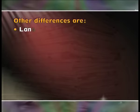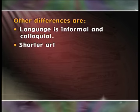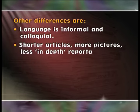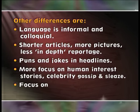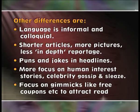Size is the main difference one notices — a tabloid is usually about 11 inches by 17 inches and a broadsheet about 11.75 inches by 21.5 inches. Other differences include informal and colloquial language, shorter articles, more pictures, less in-depth reportage, puns and jokes in headlines, more focus on human interest stories, celebrity gossip and sleaze, and a focus on gimmicks like free coupons to attract readers. Tabloid journalism is frequently termed yellow journalism, primarily because of its tendency to sensationalize and trivialize events, issues, and people.